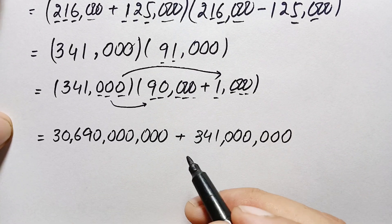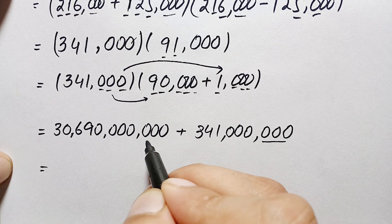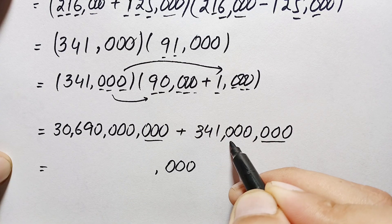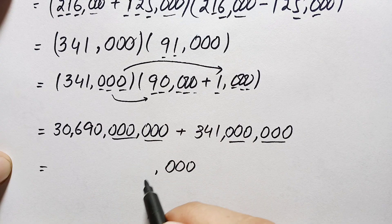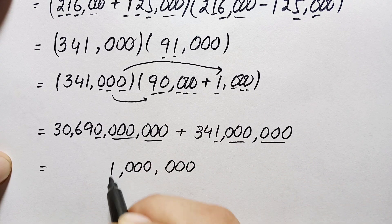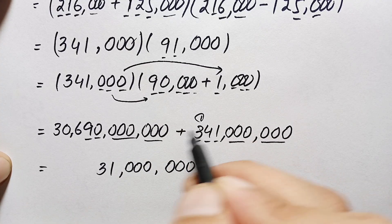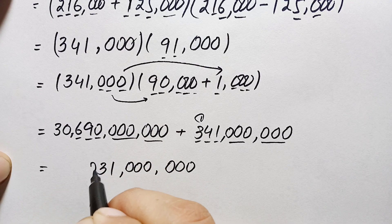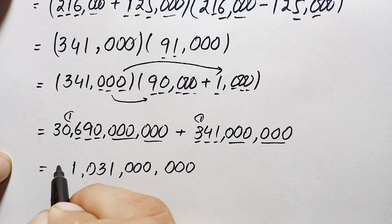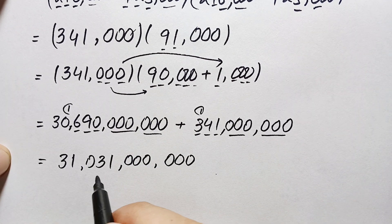Now finally we add these two numbers for our final answer. Adding 30,690,000,000 plus 341,000,000: the trailing zeros remain. 1 plus 0 is 1; 4 plus 9 is 13, write 3 carry 1; 3 plus 1 carried is 4; 4 plus 6 is 10, write 0 carry 1; 0 plus 1 is 1; and then 3. So the addition gives 31,031,000,000, that is 31 billion and 31 million.